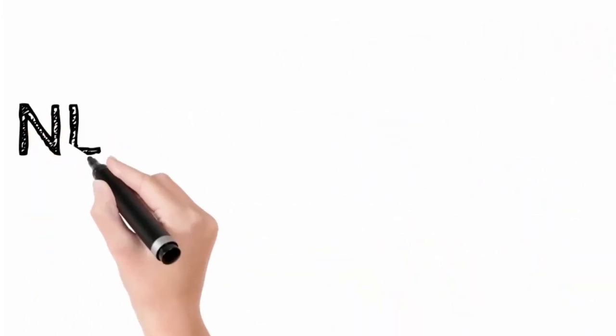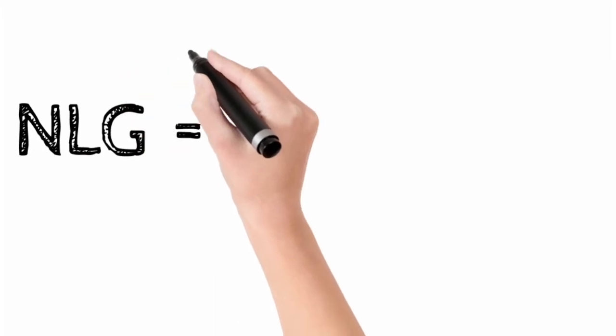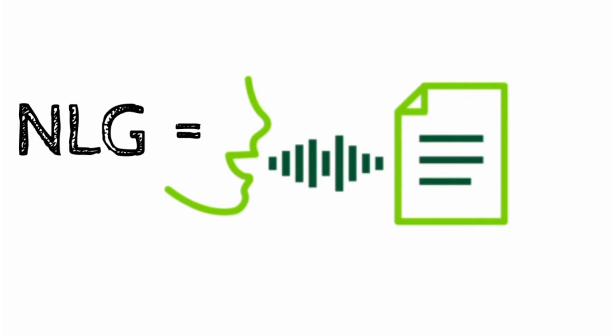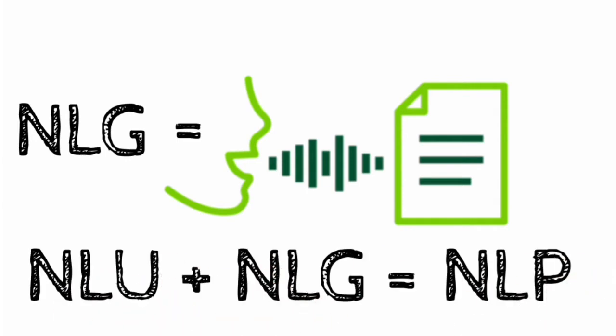Natural Language Generation, NLG, generates new text in response to the person that is asking something or questioning something. So NLU plus NLG equals to NLP.